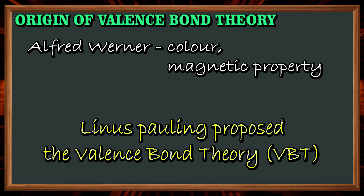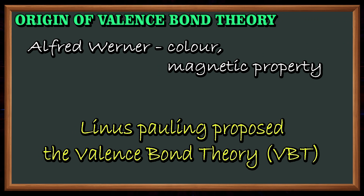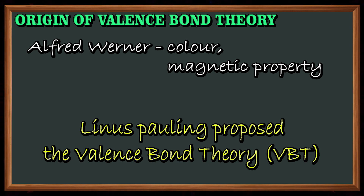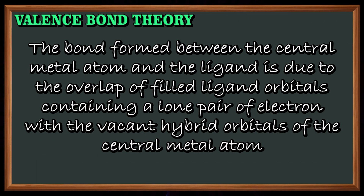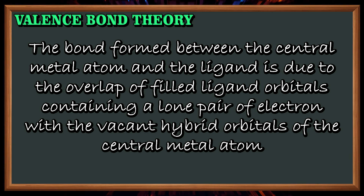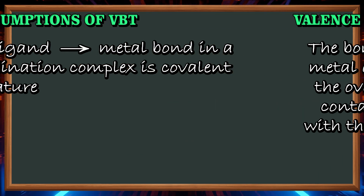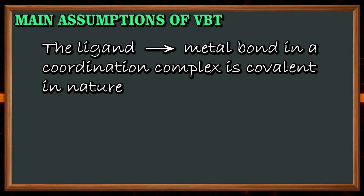Following Werner's theory, Linus Pauling proposed the Valence Bond Theory, which assumed that the bond formed between the central metal atom and the ligand is purely covalent. According to this theory, the bond is due to the overlap of filled ligand orbitals containing a lone pair of electrons with the vacant hybrid orbitals of the central metal atom.